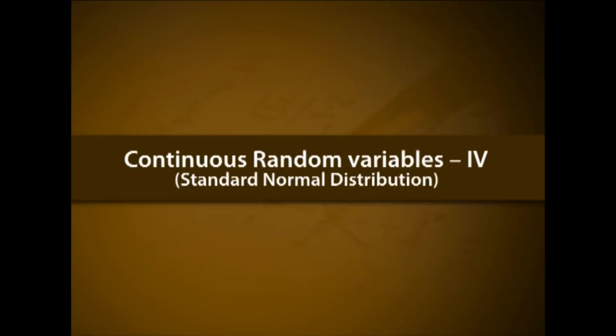Welcome back. In this module we will discuss continuous random variable part 4: standard normal distribution. The objectives of this module are to know standard normal distribution, to understand the properties of standard normal random variable, to study the characteristics of normal distribution using standard normal conversion, to familiarize with standard normal table for finding normal probabilities, and to solve application problems using standard normal distribution.